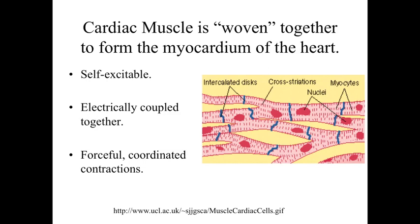Cardiac muscle is going to be self-excitable — it has the ability to cause its own contraction and doesn't need an external stimulus. It essentially causes itself to contract, then spreads that depolarization signal, that ion flow, along its membrane through the gap junctions in the intercalated disc, allowing all of the cardiac muscle within a region to contract as one forceful, coordinated unit. This is important for the organized, coordinated contraction of the myocardium — the muscle layer within the heart.